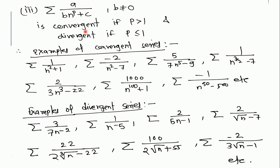We can take any constant values a, b, and c and conclude convergence or divergence. For example, if a=1, b=1, c=1, we get the series 1/(n^2 + 1), which is convergent. If a=-2, b=1, c=-1, we again get convergent series. If a=3, b=7, c=-2, then we get a divergent series. These examples illustrate both convergent and divergent cases of this series type.